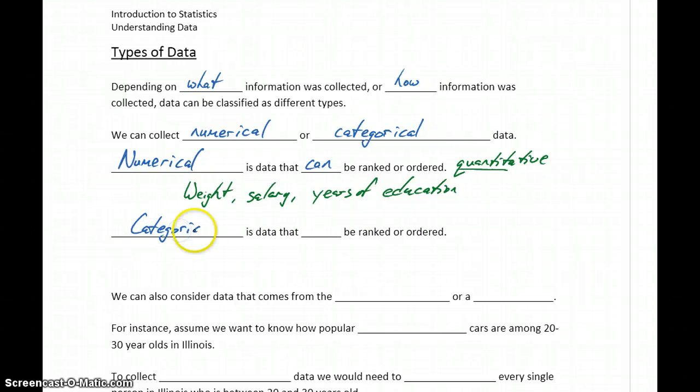Categorical data is data that can't be ranked or ordered. The other word that's used to refer to categorical data is qualitative. And here the root is the word quality.